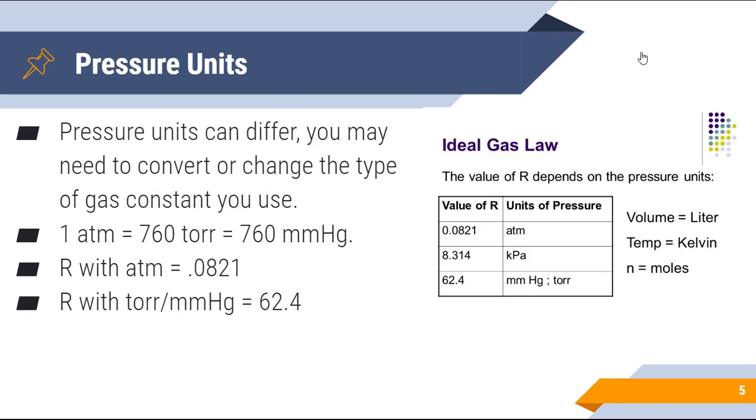Now, hopefully you remember that pressure units come in all different shapes and sizes. Pressure units can differ, so you may need to convert or change the gas constant that you use. One ATM is equal to 760 Torr or 760 millimeters of mercury. An R value with ATM is 0.0821, and with millimeters of mercury, it is 62.4. Do keep in mind that your volume needs to be in liters and needs to be in moles, and temperature must remain in Kelvin. So typically, we only change R based on the unit of pressure that we are looking at.